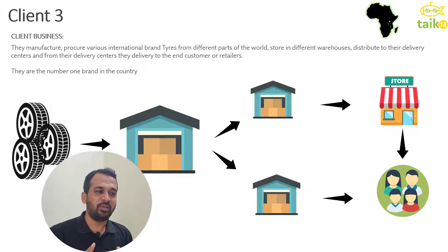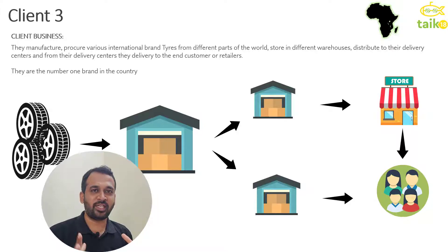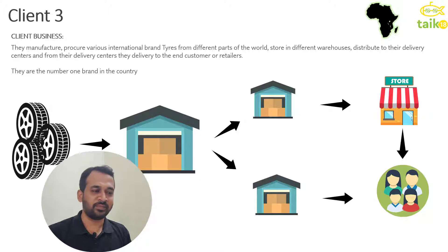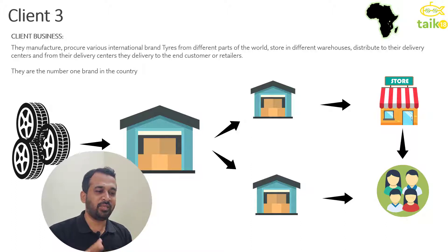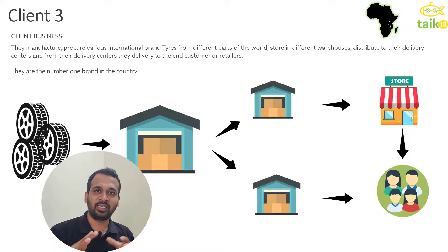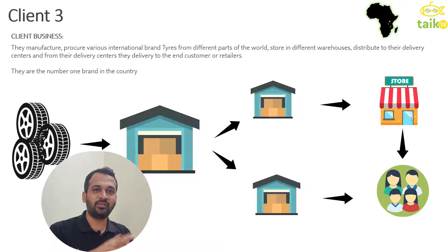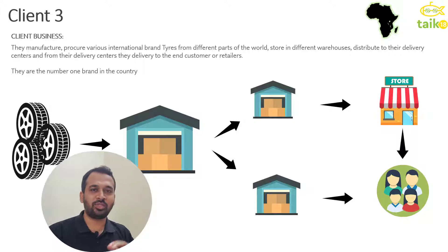They are the number one brand in the country, holding the majority stakeholder position in the tire industry. As an example shown in the images, they purchase the tires, keep them at main warehouses, split them into different sub-warehouses, and then can directly sell to customers or directly to stores.